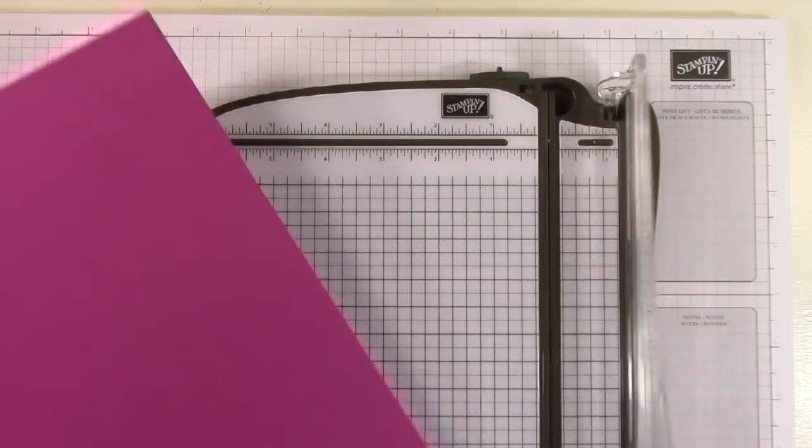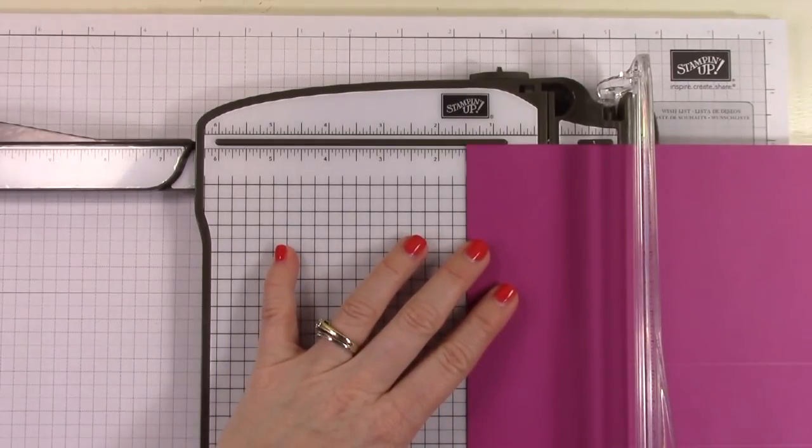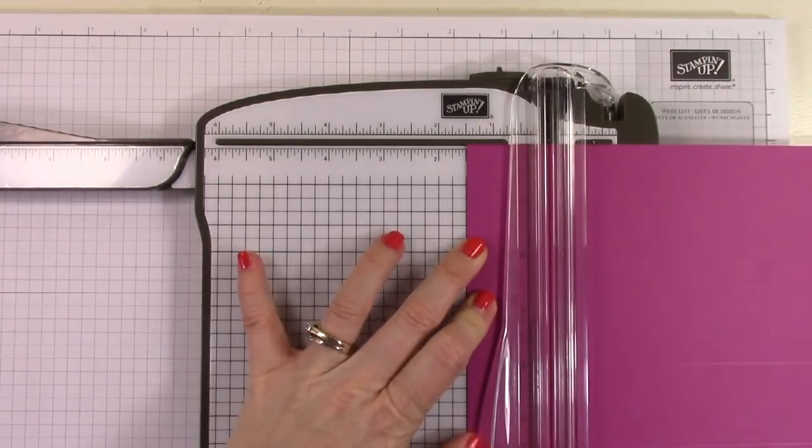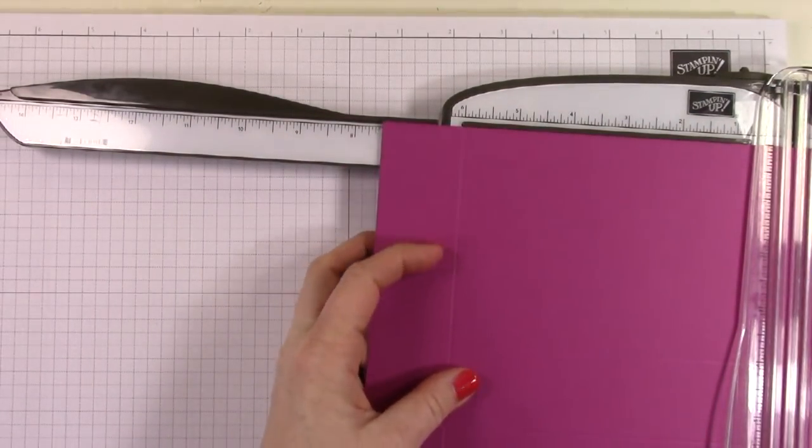So then I'm going to turn my cardstock 90 degrees, and I'm going to score at one and a half, nine inches, and ten and a half inches. And that is all the scoring that I need to do.